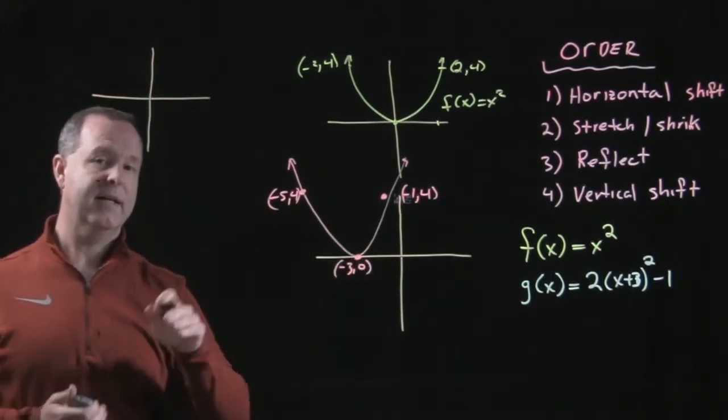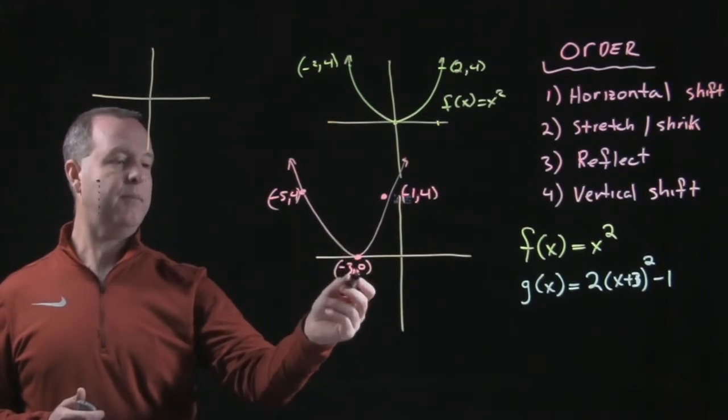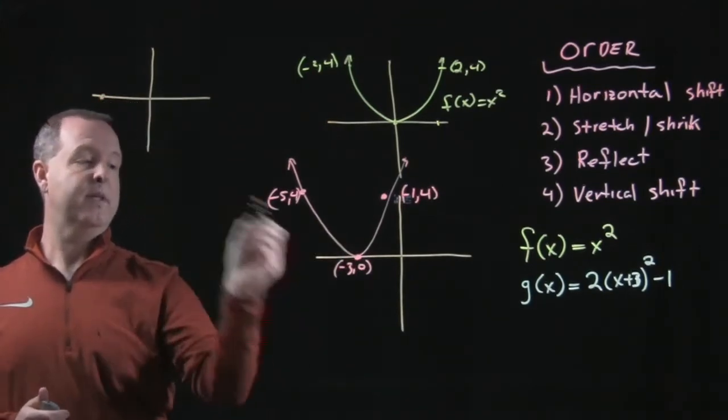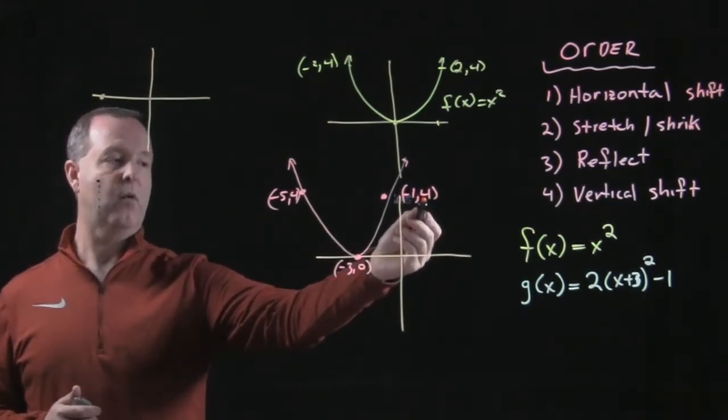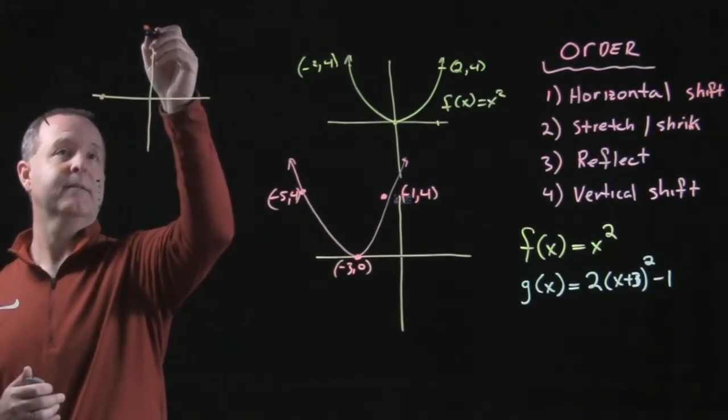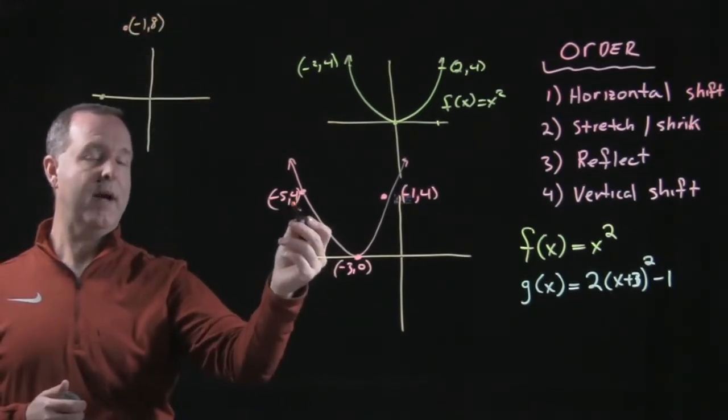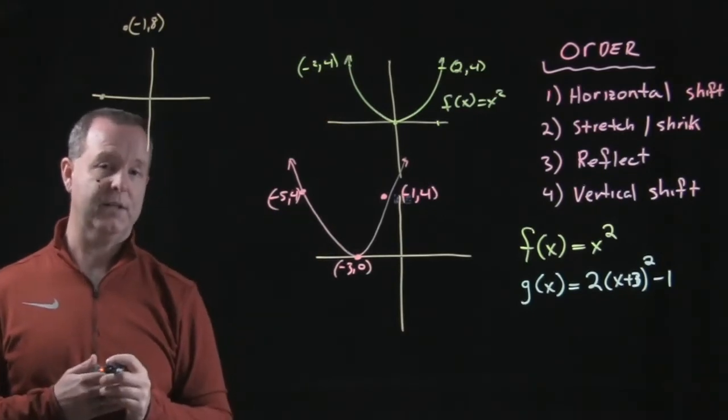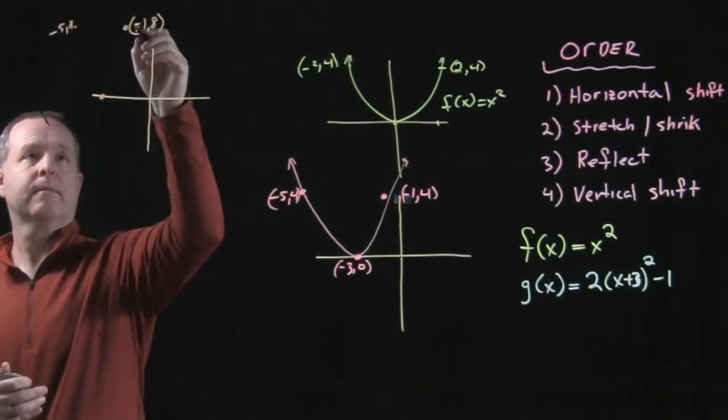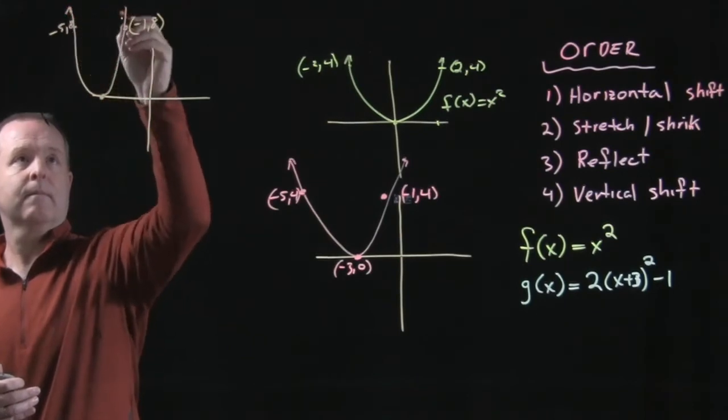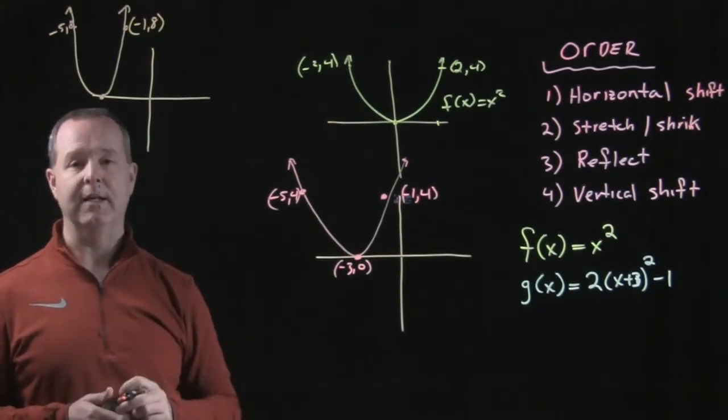So every point gets farther away from the x-axis by a factor of two. Well, I have (-3,0) still here. The zero, twice the zero is still zero. Twice the y-coordinate over here with a four becomes an eight. So I'm going to have some point up here at eight. Likewise, it's (-5,4). The y-coordinate becomes stretched twice as far away from the axis, so it becomes (-5,8). So now I have some type of stretching at that particular time.